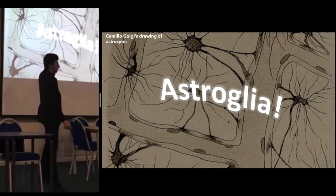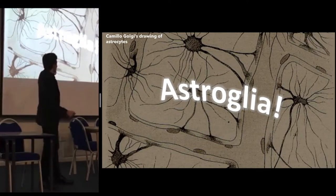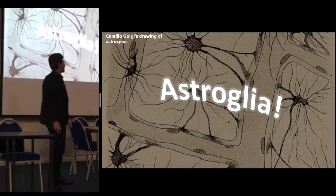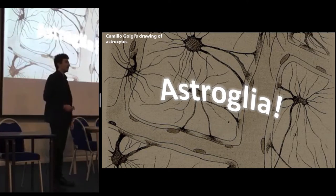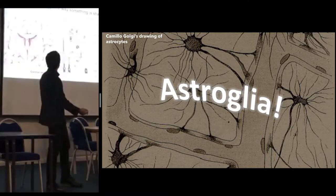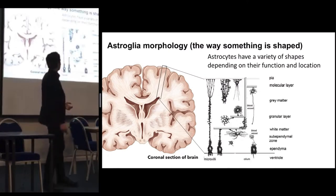A bit of etymology here: 'astro' comes from the Greek word for star, 'cyte' comes from the Greek word for cell or hollow, and 'glia' comes from the Greek word for glue — as in the glial cells are holding the nervous system together. However, as you'll appreciate, astroglia are actually much more than that. For example, most of them don't even have a star shape.